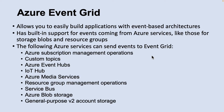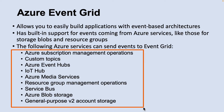Azure Event Grid allows you to easily build applications with event-based architectures. First, select the Azure resource you would like to subscribe to, then provide the event handler or webhook endpoint to send the event to. Event Grid has built-in support for events coming from Azure services like storage blobs and resource groups. It also supports your own events using custom topics. You can use filters to route specific events to different endpoints, multi-cast to multiple endpoints, and ensure your events are reliably delivered.